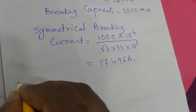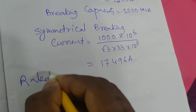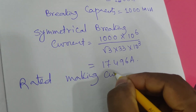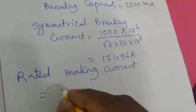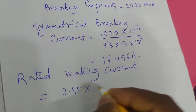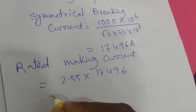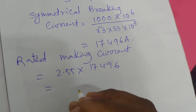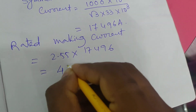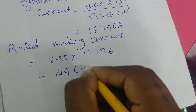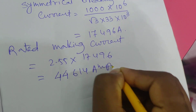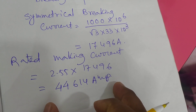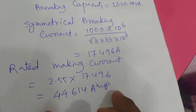The rated making current will be 2.55 × 17,496, which gives 44,614 ampere. This is the making current.